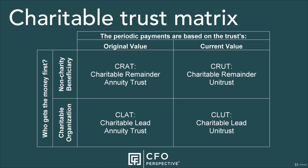Charitable Remainder Unitrust, or CRUT for short. A CRUT is similar to a CRAT — the non-charity beneficiary gets a string of payments and the rest goes to the charity. In a CRUT, though, the required amounts of the payments are based on the current value instead of the initial value of the trust. This means the payment amount varies from year to year. There's more flexibility on what payments the trust can make, and you can also add assets to a CRUT, which you can't do with a CRAT.